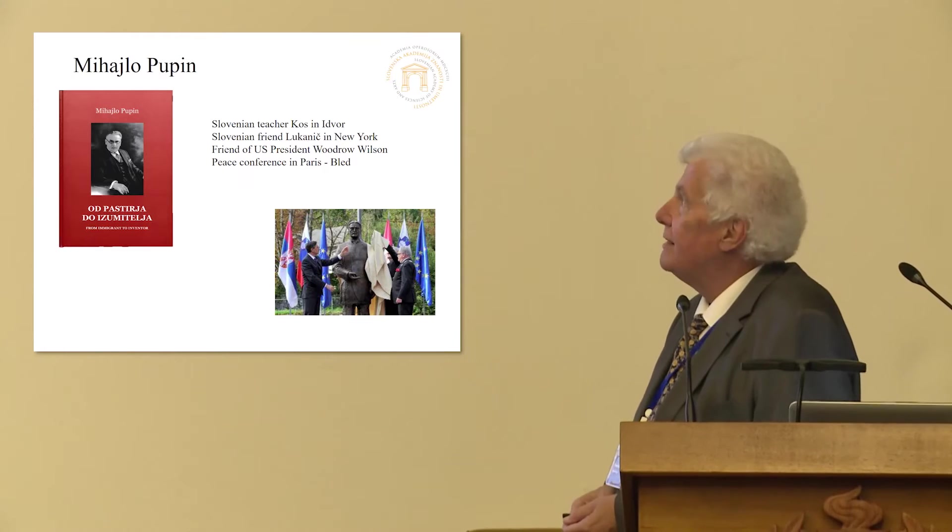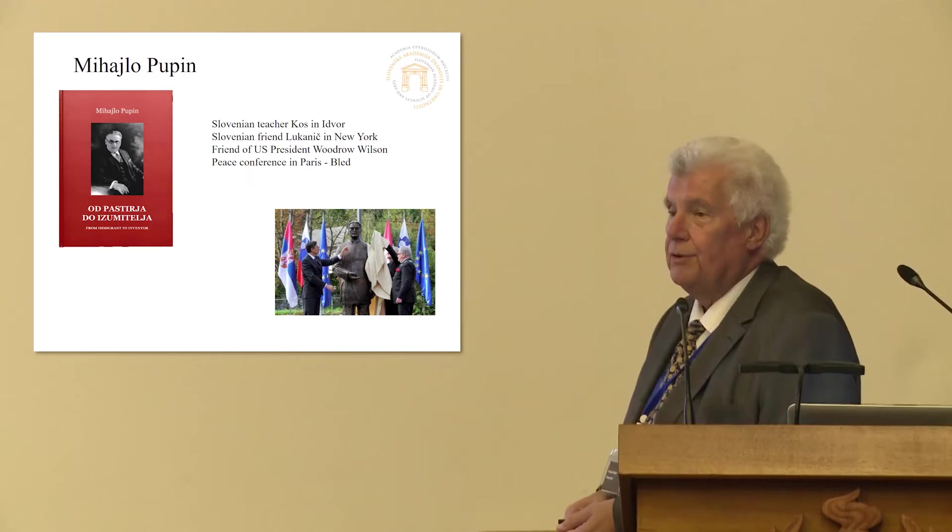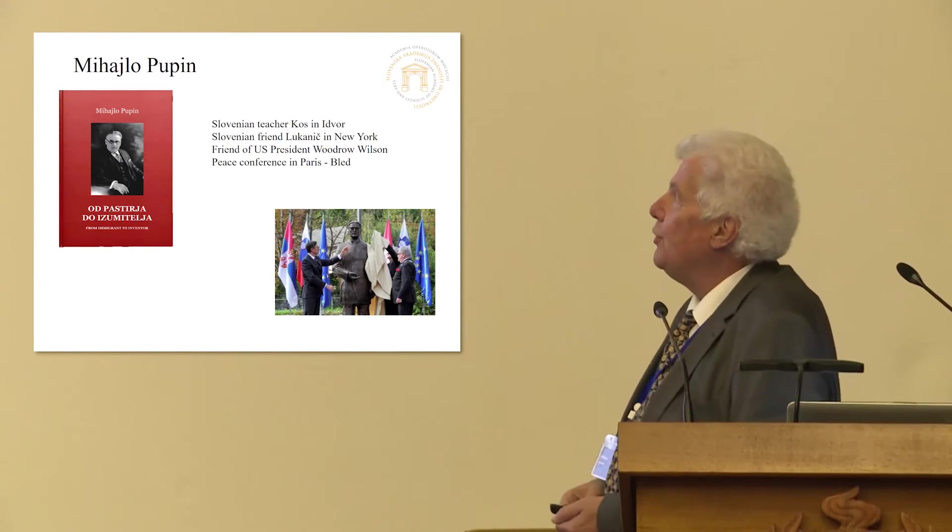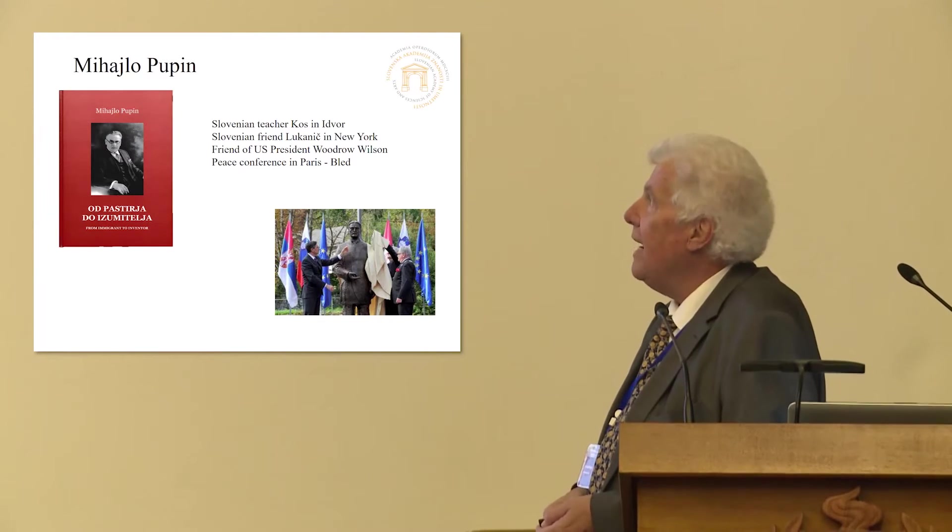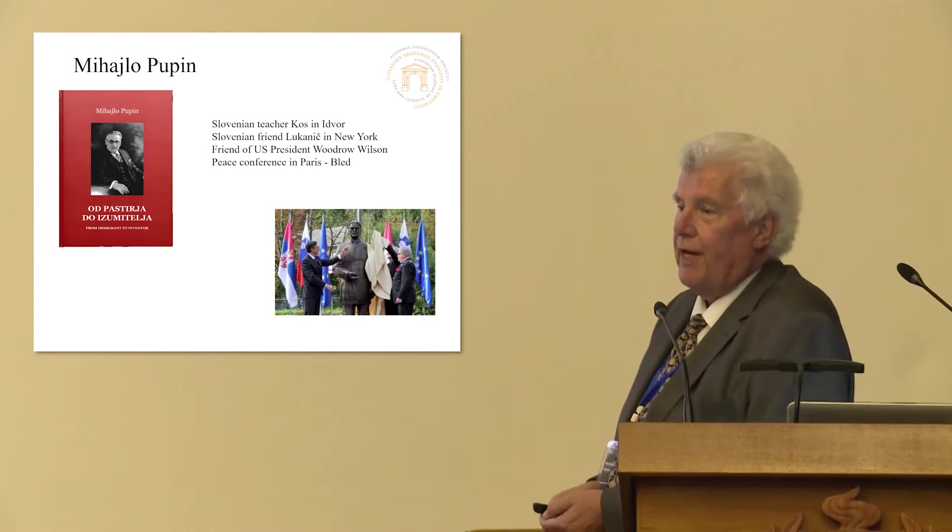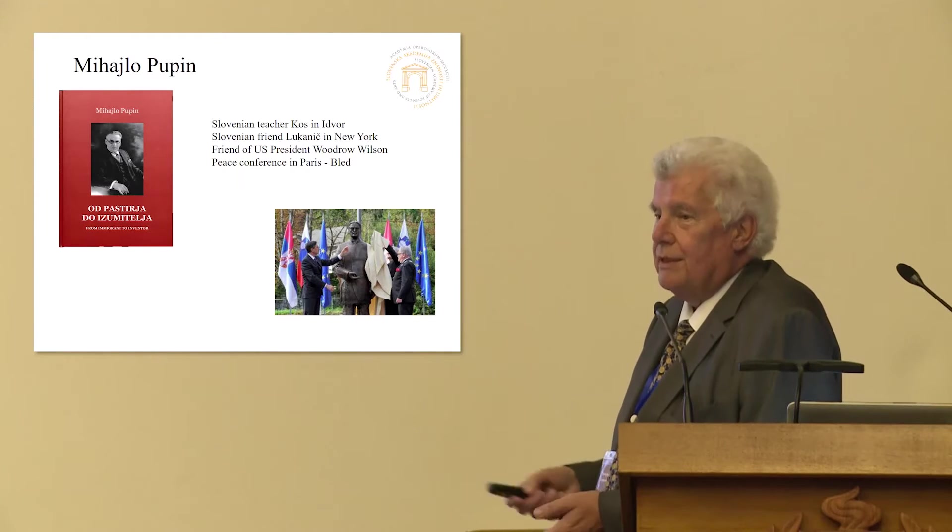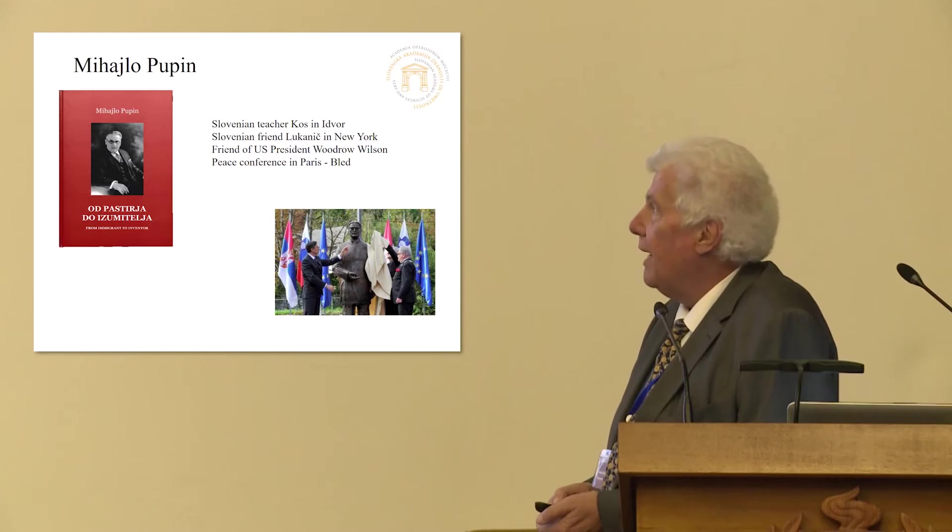He first had a Slovenian teacher already here in Serbia, in Idvor, and then he had a good friend who was helping him during his first beginnings in New York. And then he had the chance to return this friendship for Slovenia because he was present at the peace conference in Paris and because he was also a good friend of American president Woodrow Wilson. He succeeded that the Lake Bled, which is the jewel of our country, remained in Slovenia. And now at the Lake Bled, we have the monument of Mihailo Pupin.